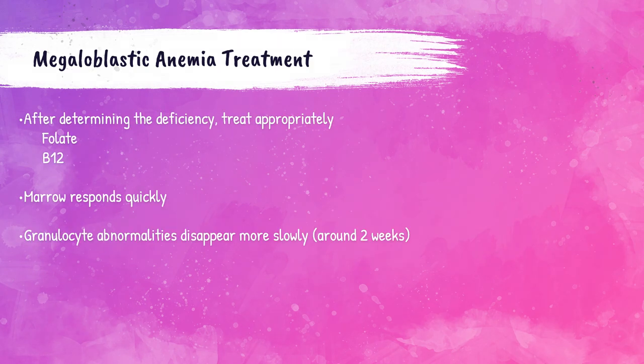Once the deficiency is determined, it needs to be treated appropriately. If it's a folate deficiency, folate supplements are given; if it's a B12 deficiency, vitamin B12 supplements are given. The bone marrow responds pretty quickly to these treatments. The hypersegmented neutrophils disappear a little more slowly — usually about two weeks after the supplements are given, they start to disappear from the peripheral bloodstream.